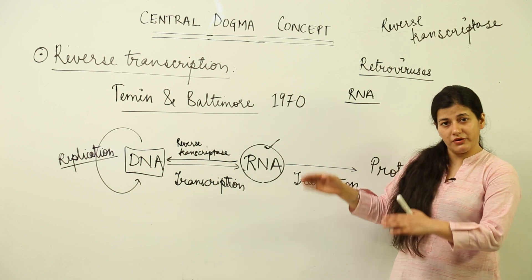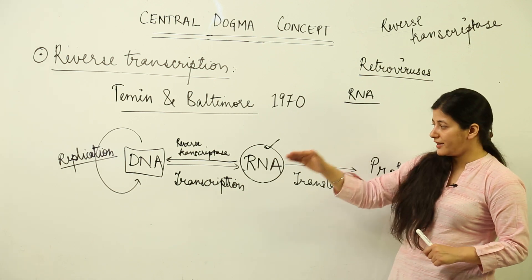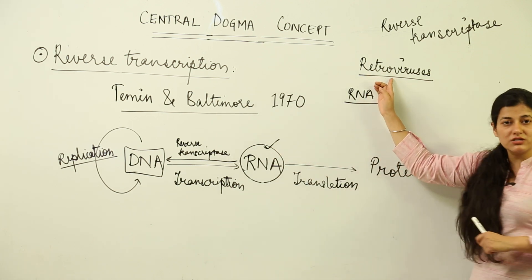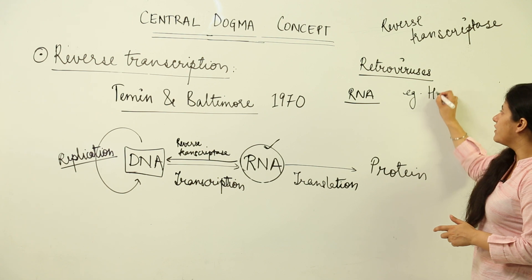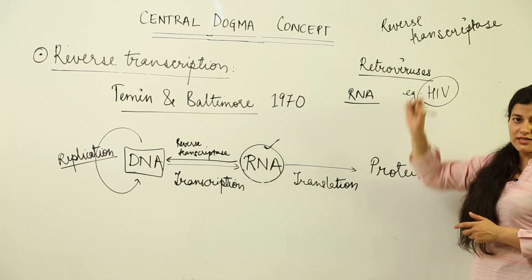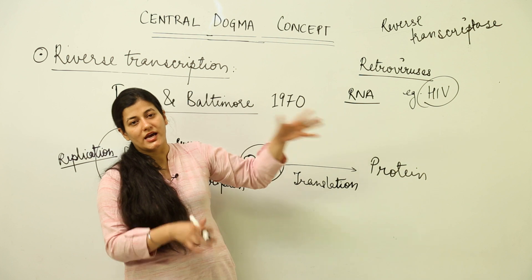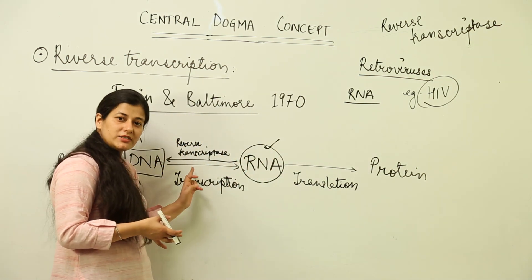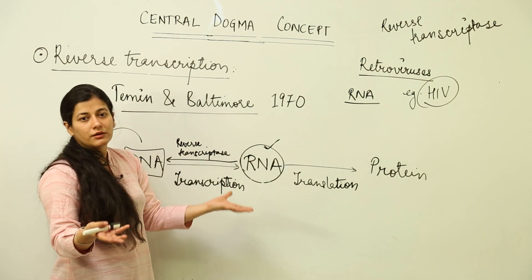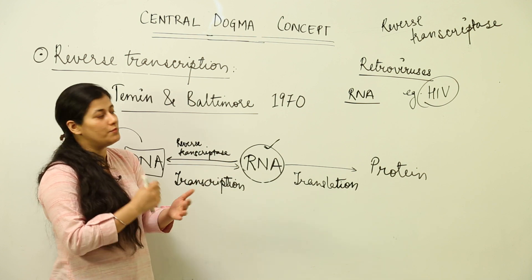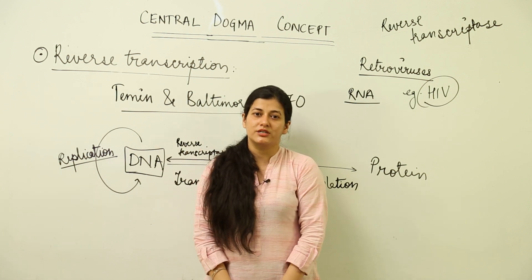Once the DNA has been formed, the entire central dogma process takes place as discussed. You have to remember what type of viruses carry out this reverse transcription — that class is known as retroviruses. For remembering it, keep in mind HIV, the human immunodeficiency virus, responsible for causing AIDS — it is a retrovirus. It has an RNA genome, reverse transcribes that genome into DNA, and then that DNA forms the particular proteins which further increase the number of viruses inside the human body.